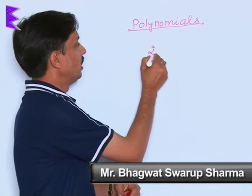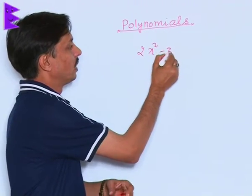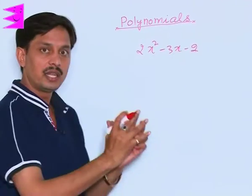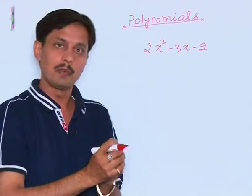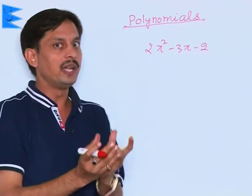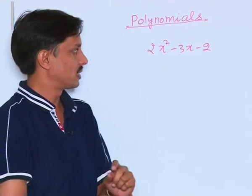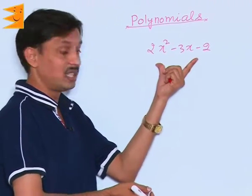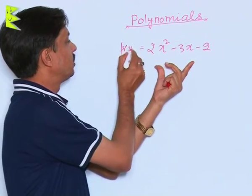Suppose I say 2x² - 3x - 2, it is one of the quadratic polynomials. You want to find two such values of x which bring this polynomial to 0.